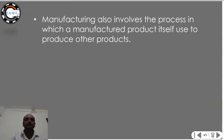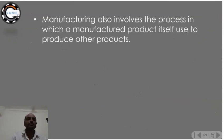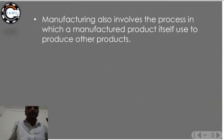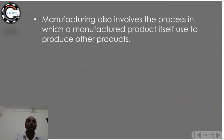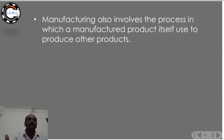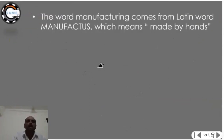Manufacturing also involves the process in which a manufactured product itself is used to produce other products. For example, a scissor — I first have to manufacture the scissor, and then I can use that product to make cloth. This is what that statement tells us.